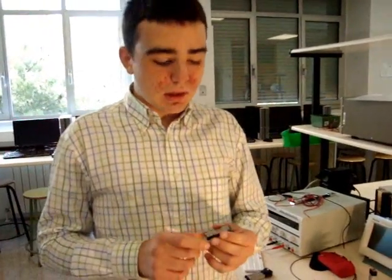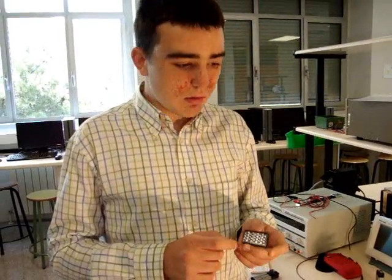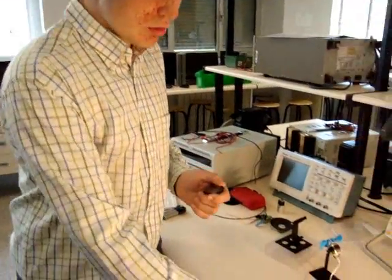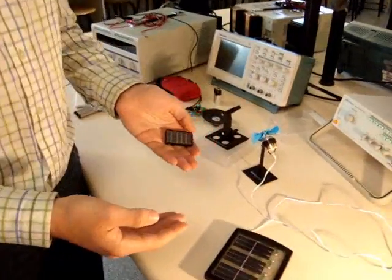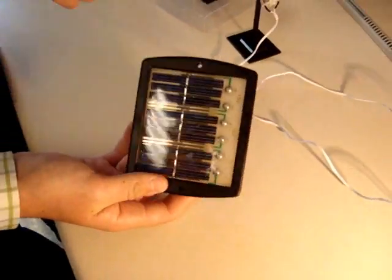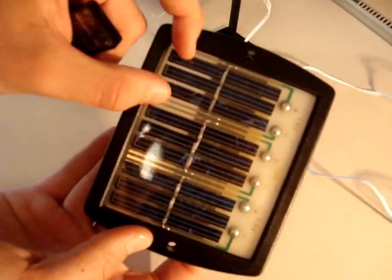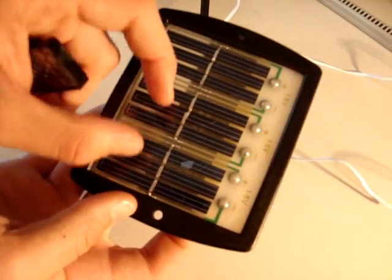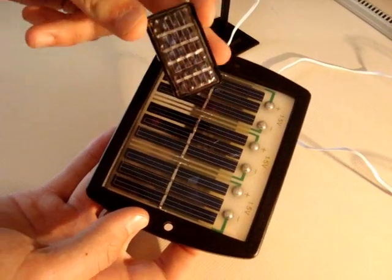As we have seen before, how the cell works. Now, we are going to show what it makes. Here, we have a lot of cells. As you can see, it is the same as this, but bigger.